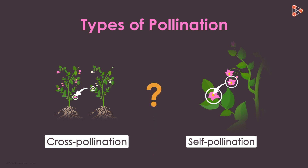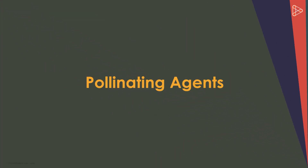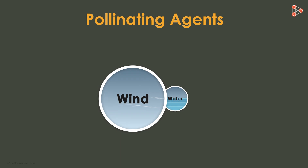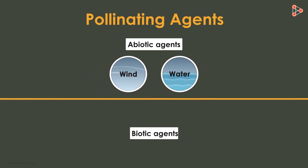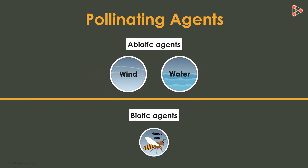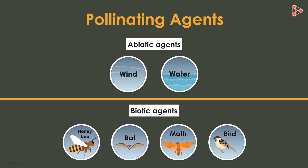Can you guess how this process of transfer of pollen grains occurs? For this, there are several agents which aid the process. Agents such as wind and water are the abiotic ones. On the other hand, biotic pollinators such as bees, bats, moths and birds also help in the process.